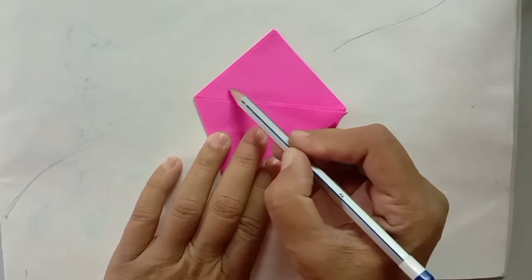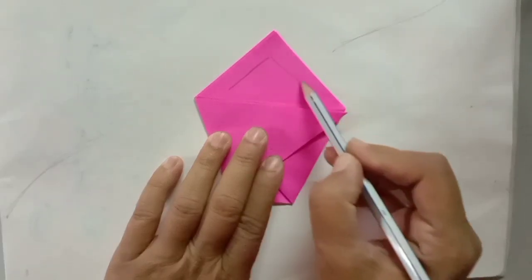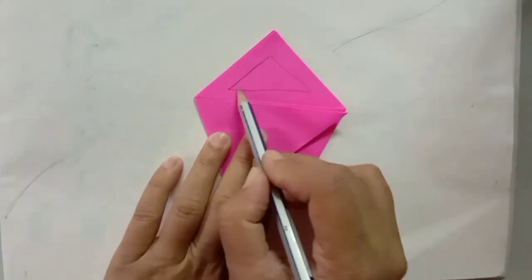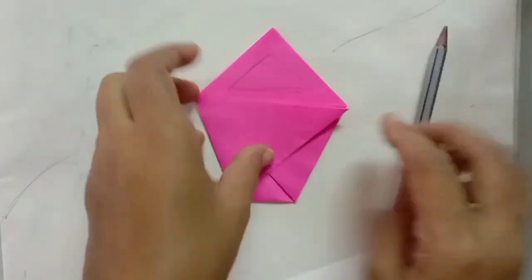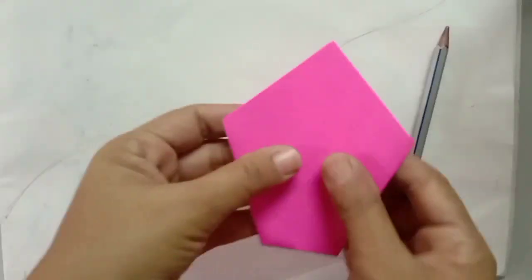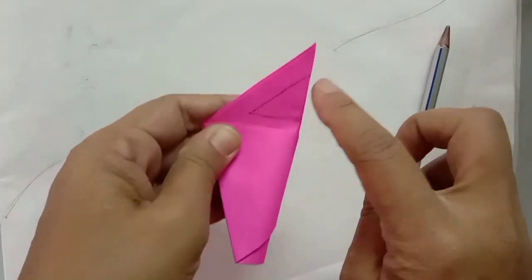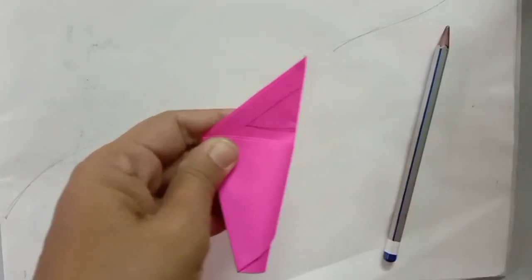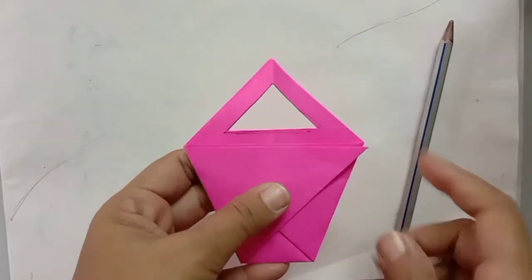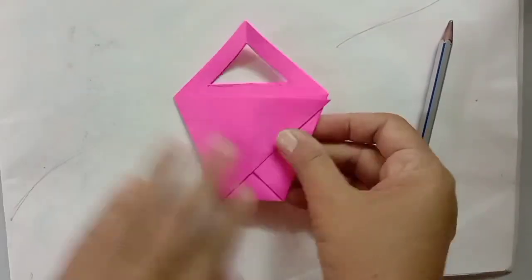Now step number three: you have to draw a triangle and then you have to fold. Fold, afterward with scissor you have to cut this part. So like this you will get it. Now this we have to stick here.